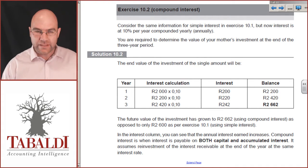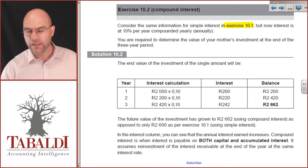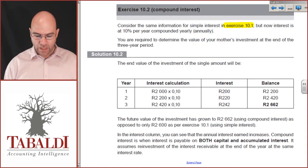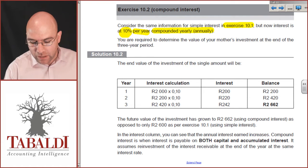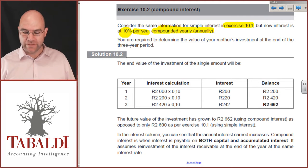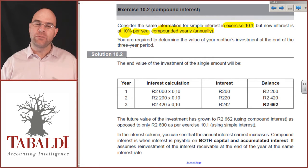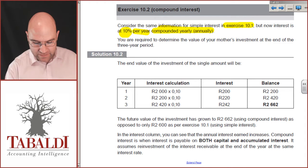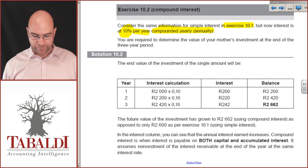Consider the same interest information for the simple interest calculation you did in 10.1, but now the interest is 10% per year compounded annually. You're required to determine the value of your mother's investments at the end of the three-year period. We were told she has 2,000 Rand. If your mother was going to invest it for three years at 10% per year compounded annually, what would the future value be?